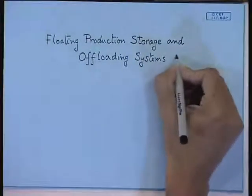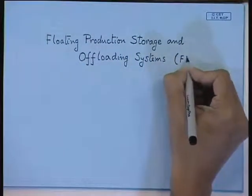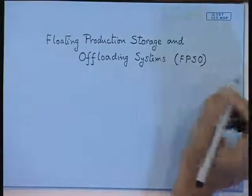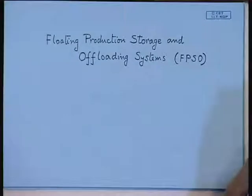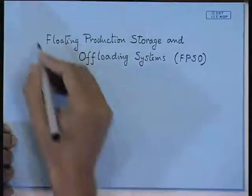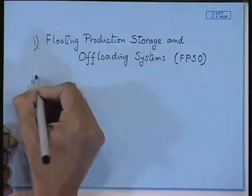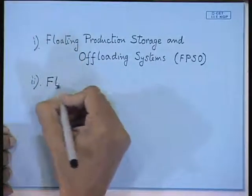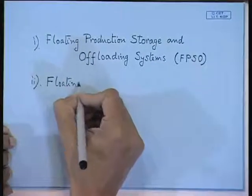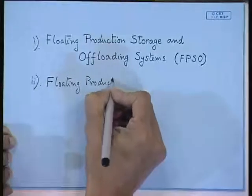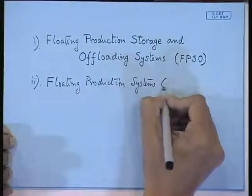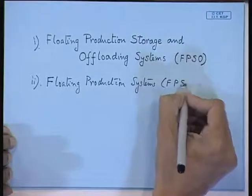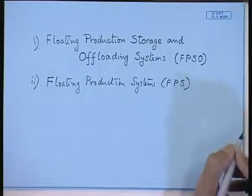Today we will begin our discussion on floating production storage and offloading systems, in short called FPSOs. You may also have simply floating production systems, called FPS. These are two types — the other type is called offshore floating production systems, which do not have any storage facility. These two categories are normally found in the offshore industry.